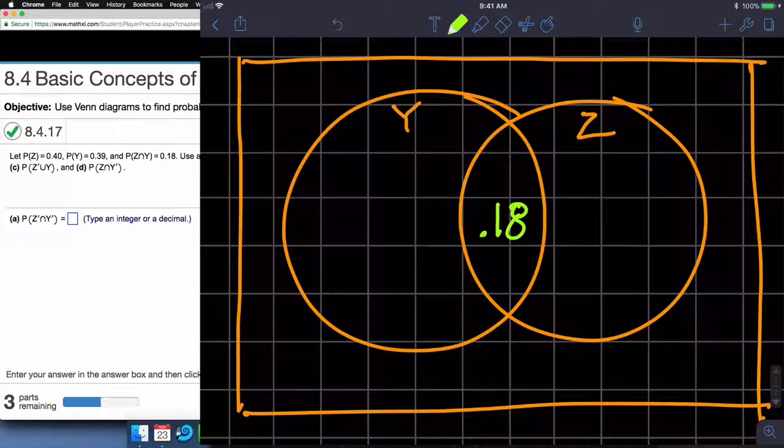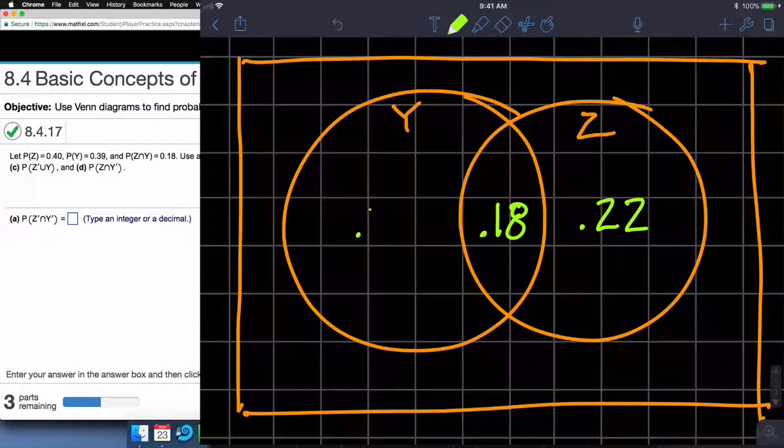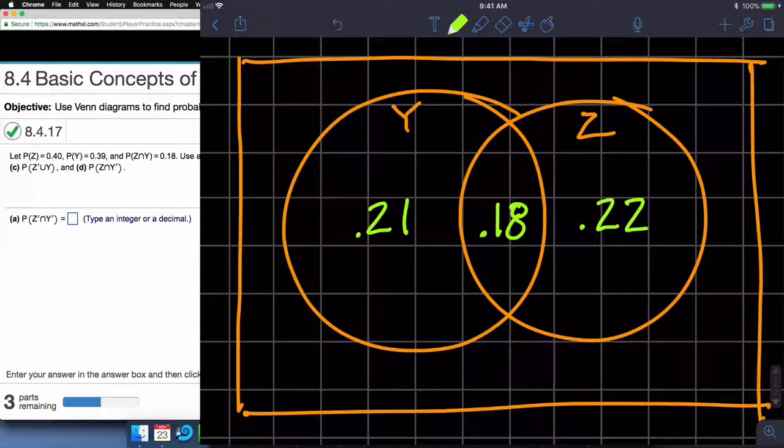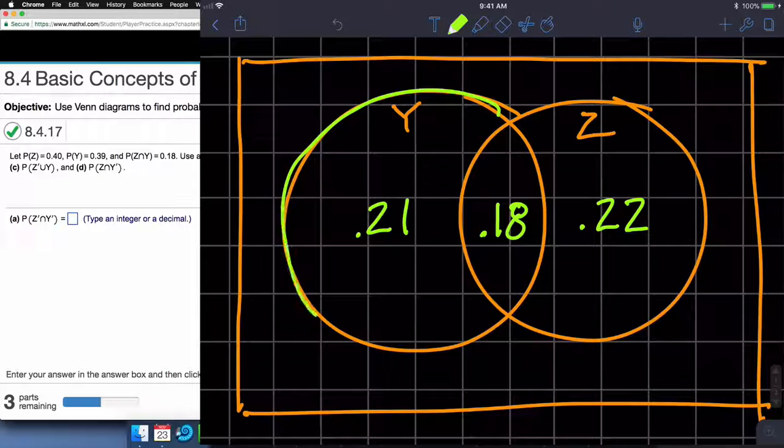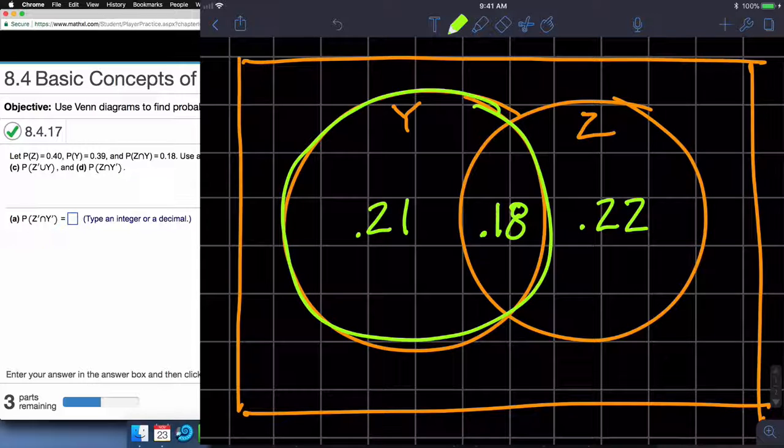Z is 0.40, so I have to subtract 0.18 from 0.40 and that gives me 0.22. And then Y is 0.39, so that's 0.21. Since the total of Y is 0.39, everything inside of Y has to add up to 0.39. That would be 0.21 plus 0.18, which is 0.39. Same goes for Z. Those two have to add up to 0.40.